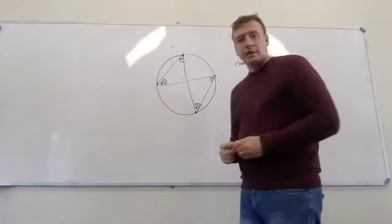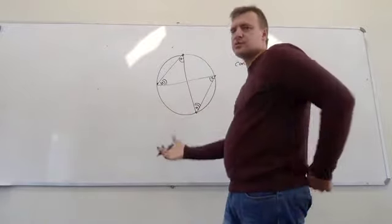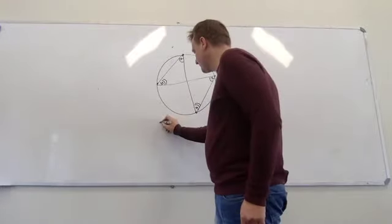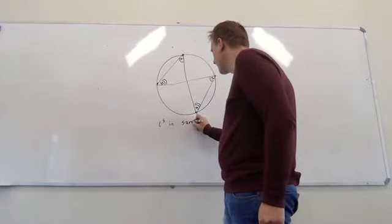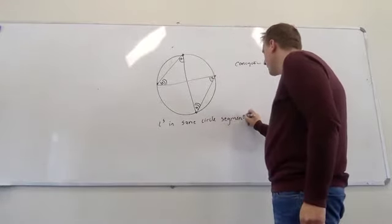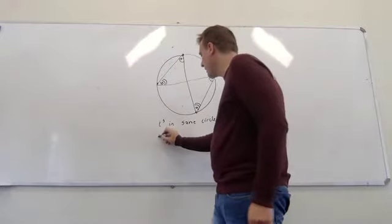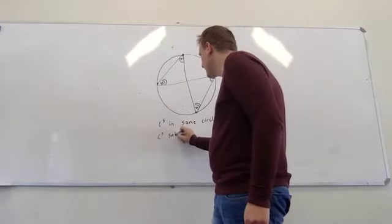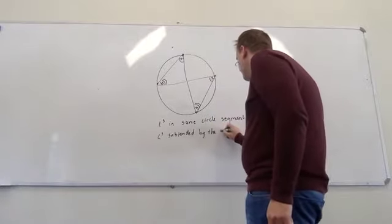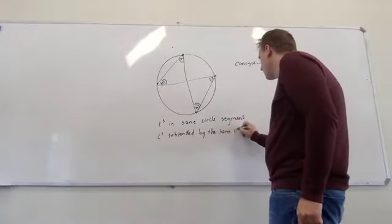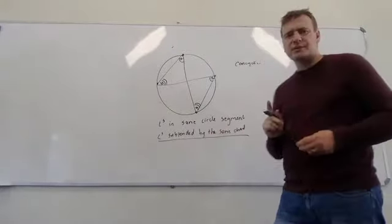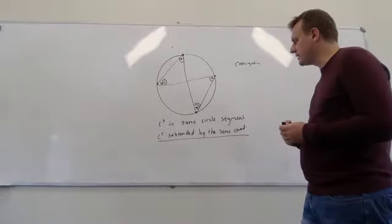So the reason we give in Euclidean Geometry for this theorem is: angles in the same circle segment. We also can say angles subtended by the same chord, by the same chord. And this is kind of an interesting one — I want to pause there with 'angles subtended by the same chord.'